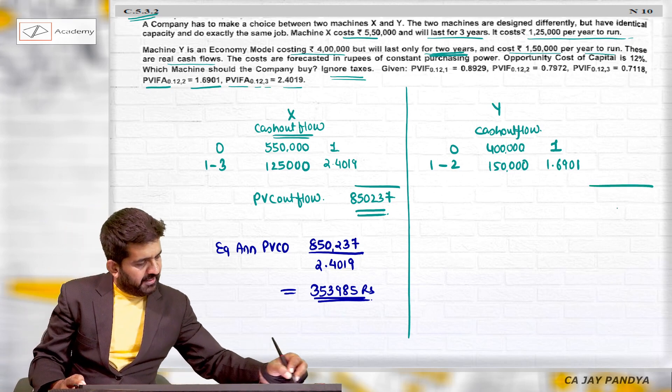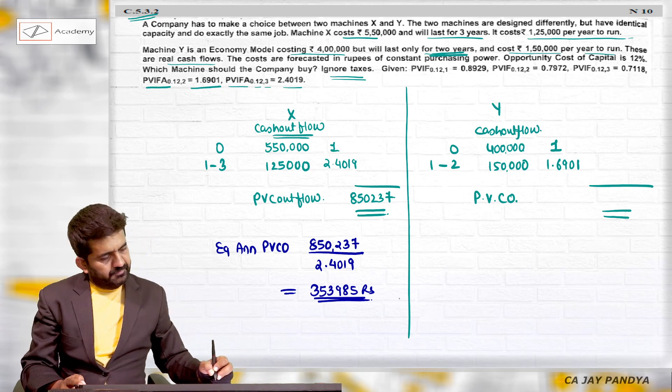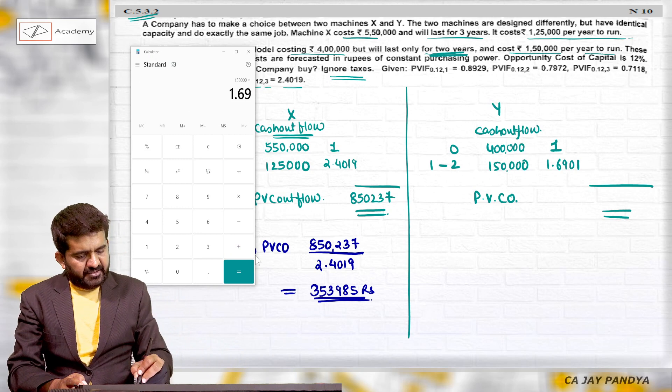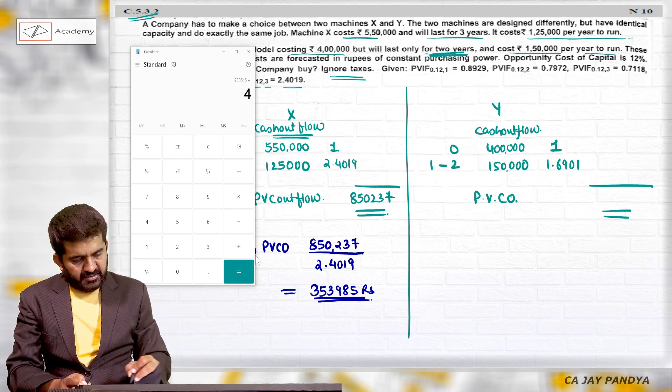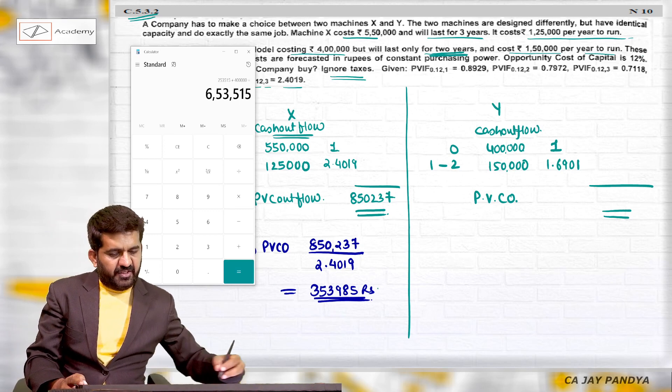I will be getting the present value of cash outflow answer, which is 1 lakh 50,000 into 1.6901 plus 4 lakhs, which is 6 lakh 53,515.